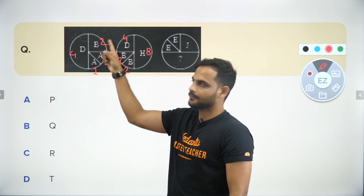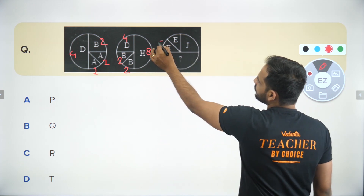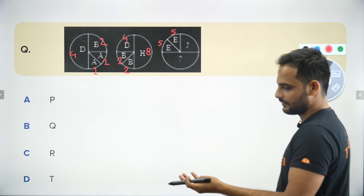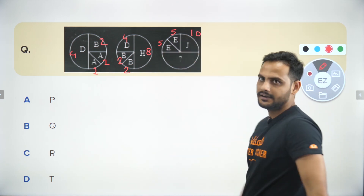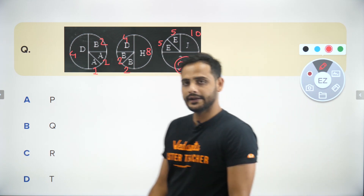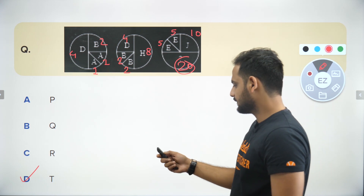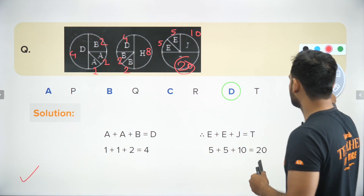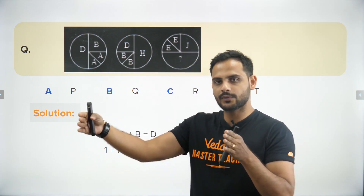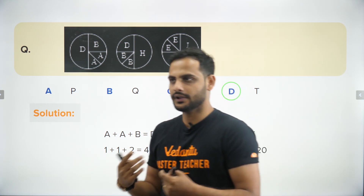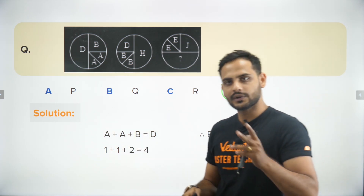Continuing the pattern with E (= 5): 5 + 5 = 10, which is J; then 10 + 10 = 20. The letter with numerical value 20 is T — E, J, O, T. So the correct answer is T. Remember: always try A = 1 to Z = 26 first. If that doesn't work, try the reverse: Z = 1, A = 26.